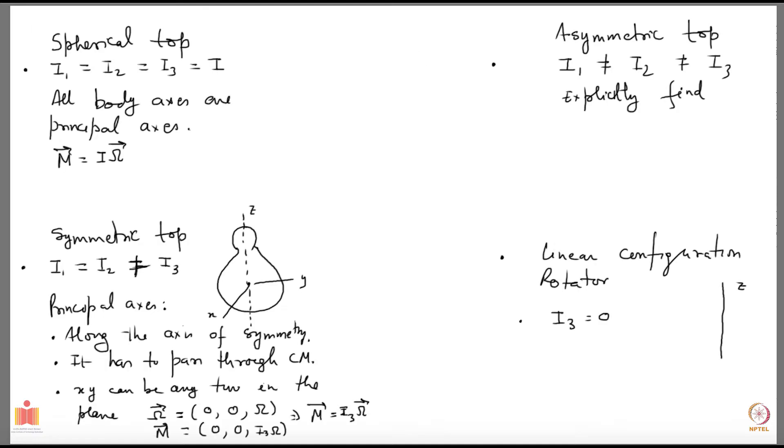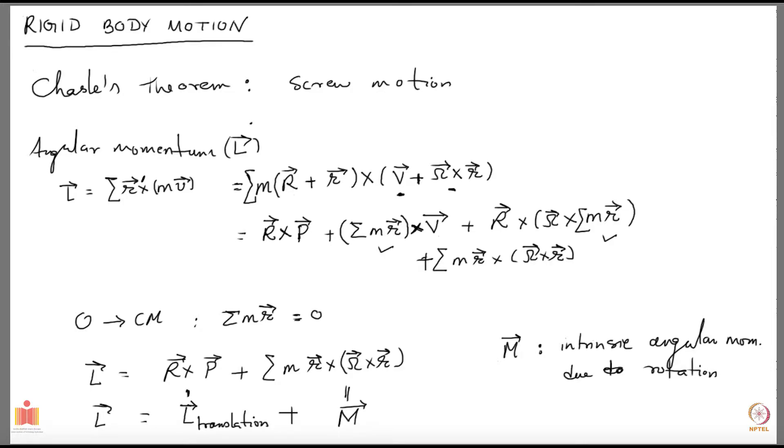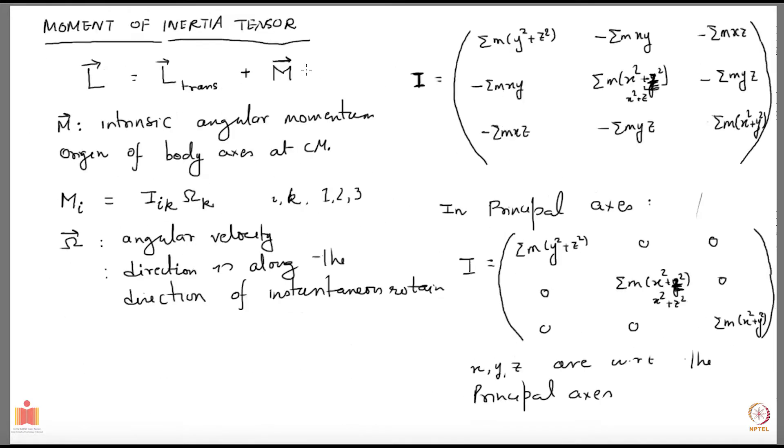Let me write down, we are looking at the kinetic energy of a rigid body. When we were looking at the angular momentum, the velocity v we wrote down as capital V plus omega cross r. That is what I am going to use.